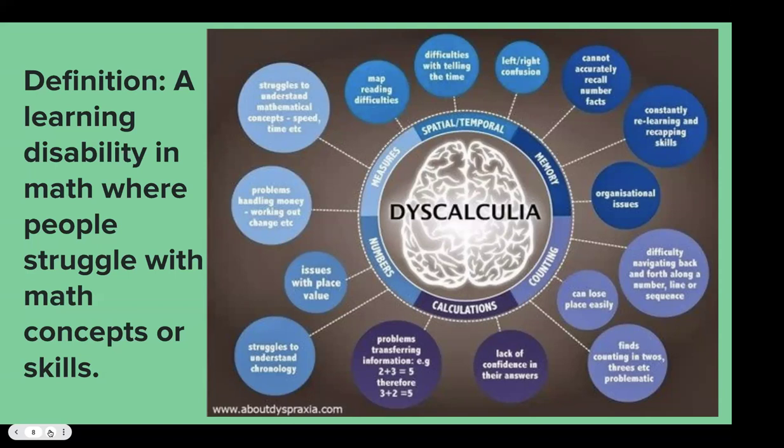Counting by twos, threes, or fives can be really challenging, as can navigating on a number line — he mentioned that in the video. Spatial awareness is also really tough. For example, if somebody says 'that dog is ten feet away,' that's really difficult for someone with dyscalculia to envision because they don't really have a concept of what a foot is, let alone ten feet.